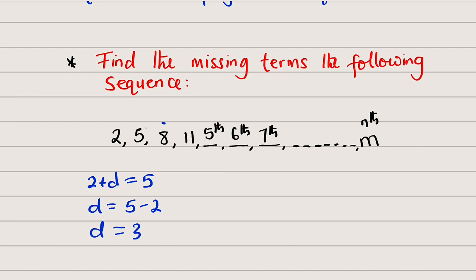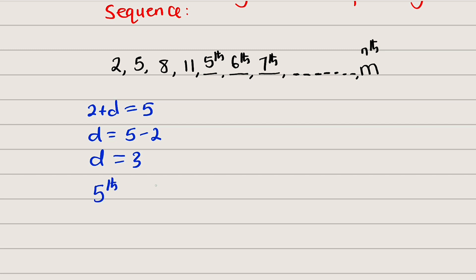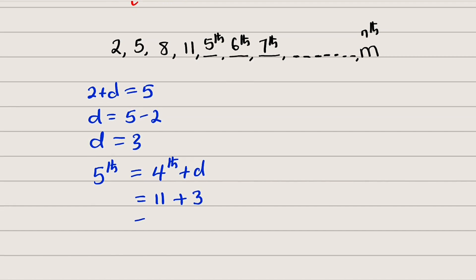This constant common difference works for all terms in the sequence. We can verify: 8 minus 5 gives 3, and 11 minus 8 gives 3 as well. For the fifth term, it will be equal to the fourth term plus the constant common difference. The fourth term is 11, so this equals 11 plus 3, which gives us 14.